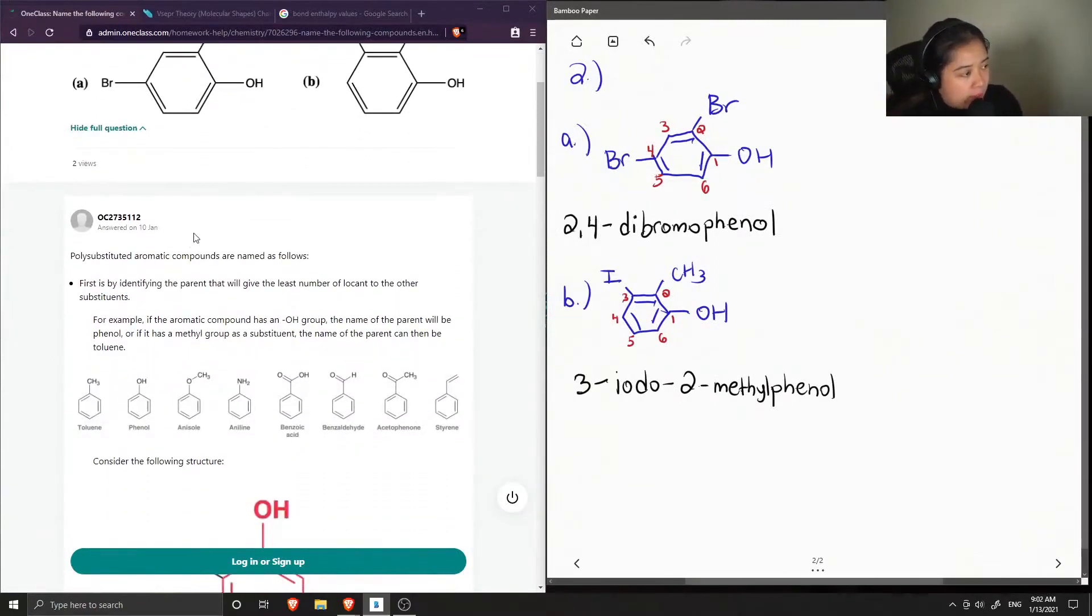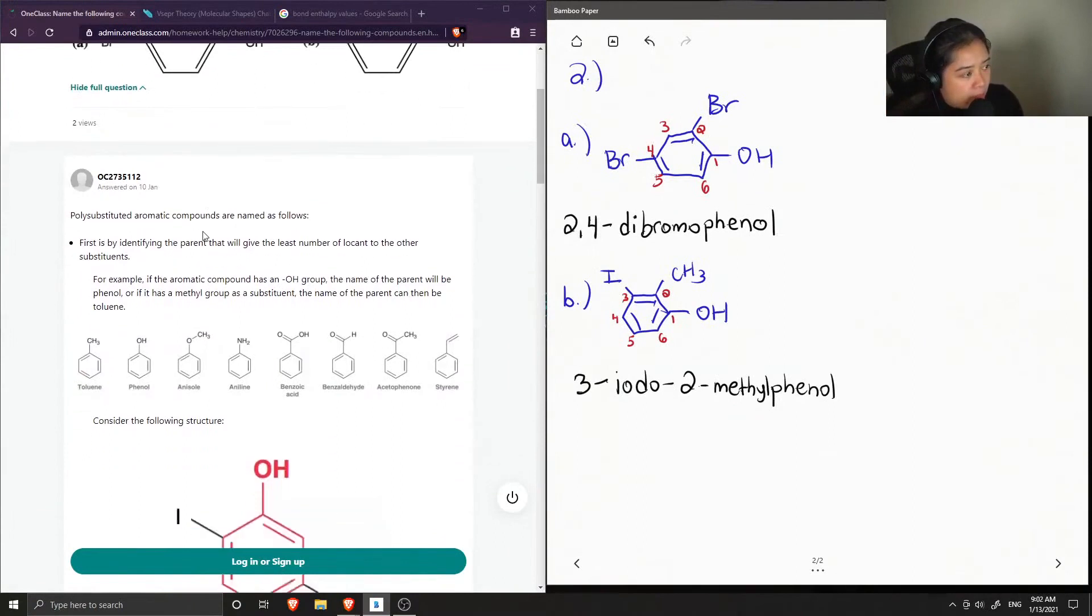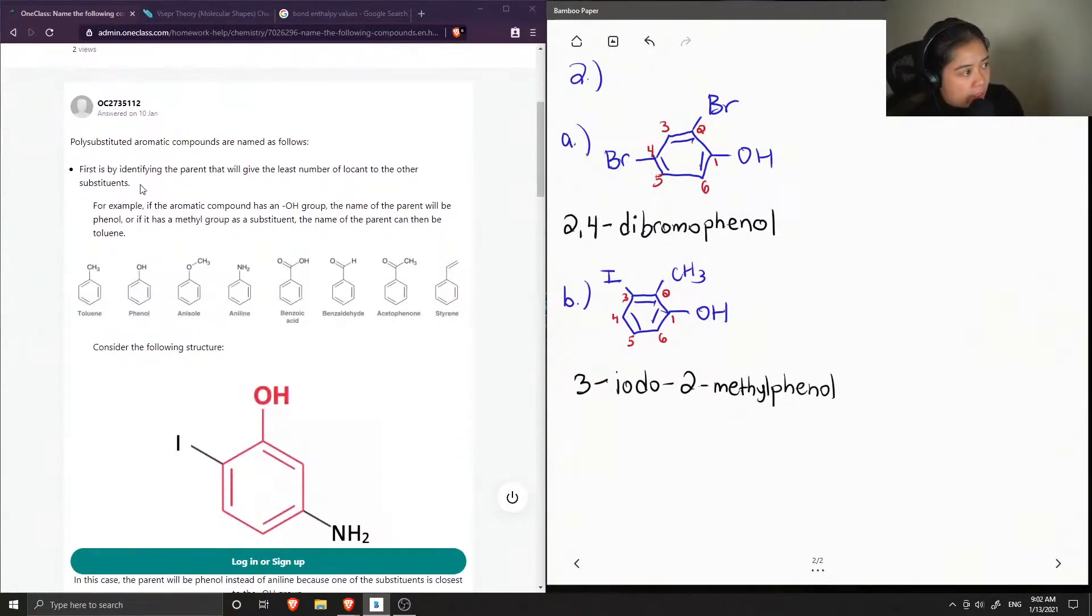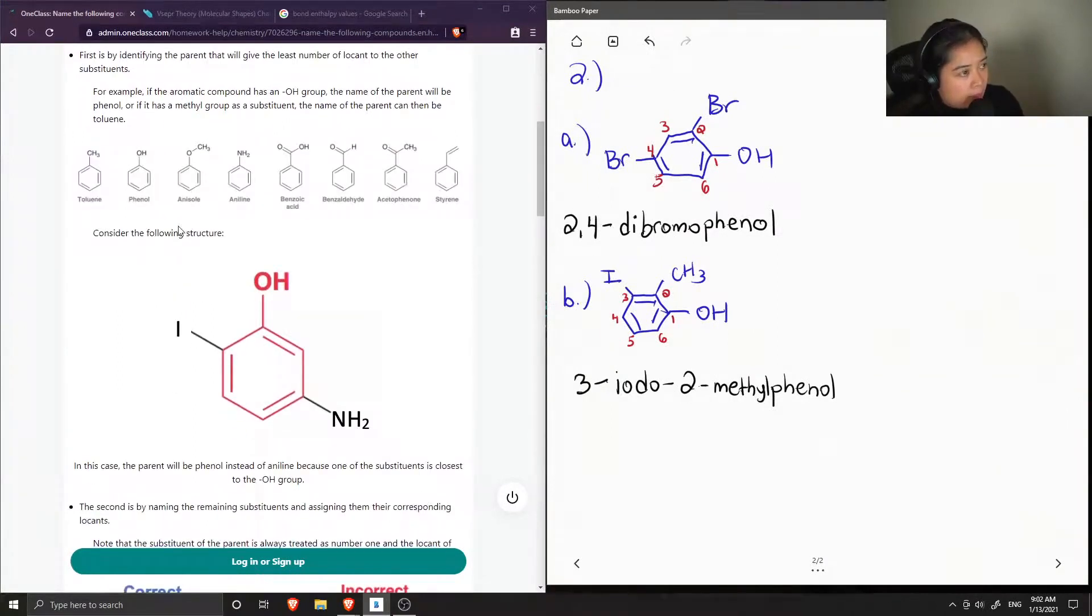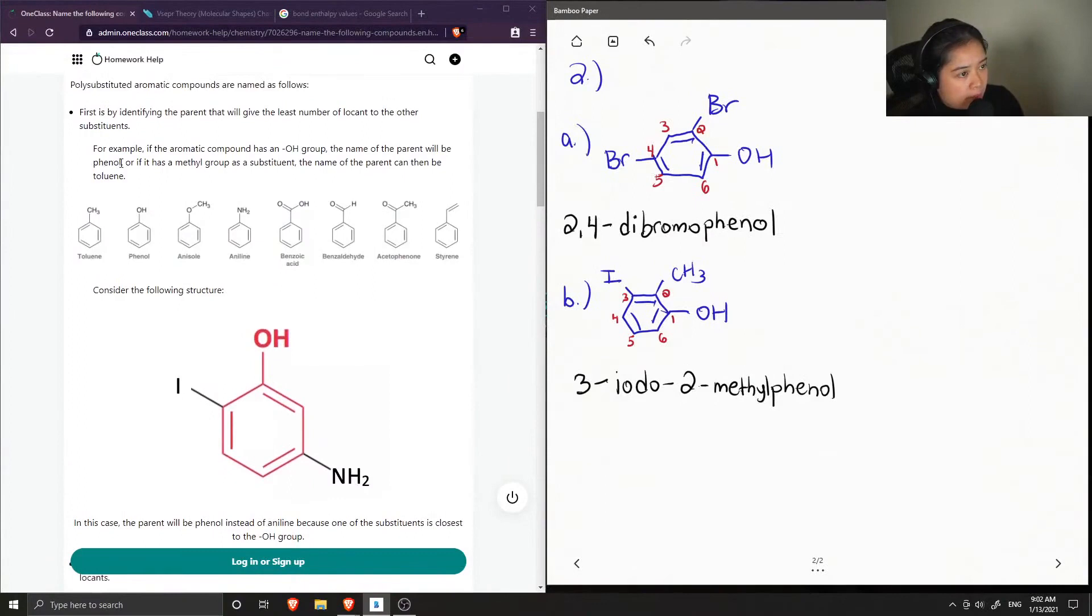Poly-substituted aromatic compounds are named as follows. First is by identifying the parent that will give the least number of locant to the other substituents. For example, if the aromatic compound has an OH group, the name of the parent will be phenol. Or if it has a methyl group as a substituent, the name of the parent can then be toluene. Okay, so that's why our parent was named phenol.